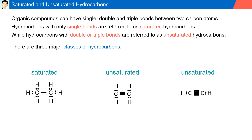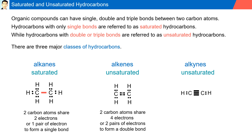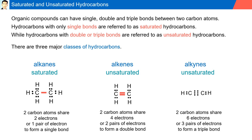There are three major classes of hydrocarbons: alkanes, which have single bonds; alkenes, which have double bonds; and alkynes, which have triple bonds between two adjacent carbon atoms. In alkanes, two carbon atoms share two electrons, or one pair of electrons, to form a single bond. In alkenes, two carbon atoms share four electrons, or two pairs of electrons, to form a double bond. In alkynes, two carbon atoms share six electrons, or three pairs of electrons, to form a triple bond.